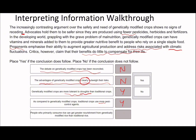Finally: 'People who primarily consume rice can get greater nourishment from genetically modified rice than traditional rice.' It doesn't say rice anywhere in the text. But we remember reading about the nourishment idea: 'Genetically modified crops can have vitamins and minerals added to them to provide greater nutritive benefit to people who rely on a single staple food.' If someone primarily consumes rice, that is a single staple food — so you can once again make that inference. But the inference has to be relevant — if it said people who consume avocado on toast, that would be wrong, because that's not a single staple food.